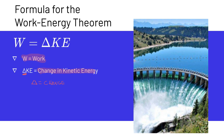We've seen delta before, especially with velocity and acceleration — for example, delta D for change in displacement over time equals velocity. Here, we can write the change in kinetic energy as KE final minus KE initial. So delta KE equals KE final minus KE initial.